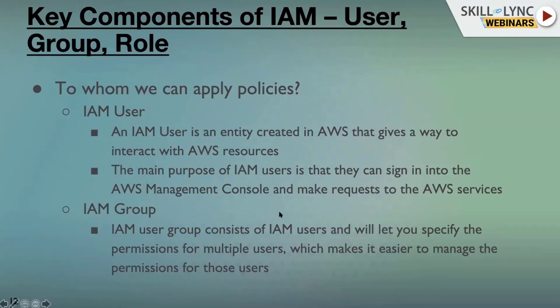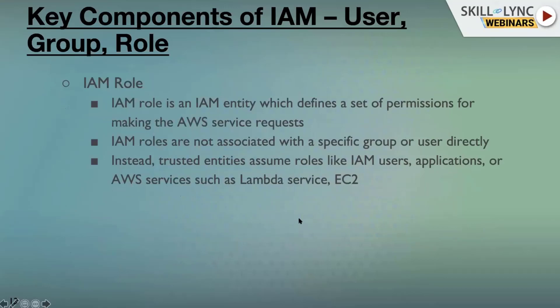Groups ease management — rather than writing policies for each and every user in a company, you club users into groups and attach a single policy to the group, avoiding redundancy. IAM Role's most common use case is cross-account access. If there are two AWS accounts — Account A and Account B — and a user in Account B wants to access an S3 bucket in Account A, we can leverage IAM role: attach a role to the user and grant access to the resource.